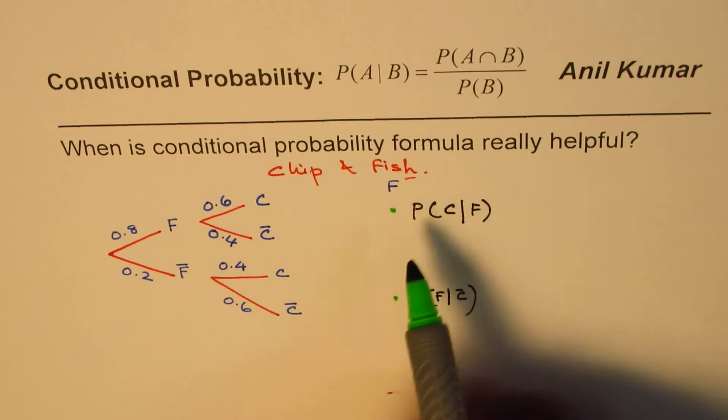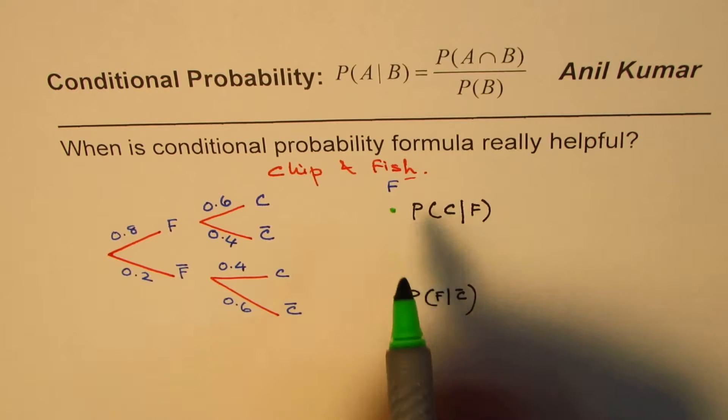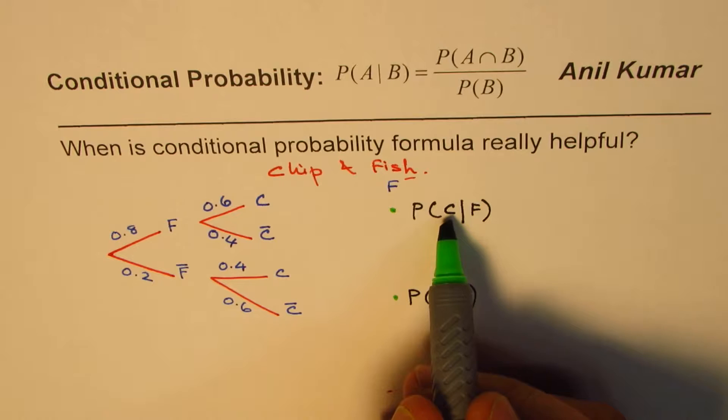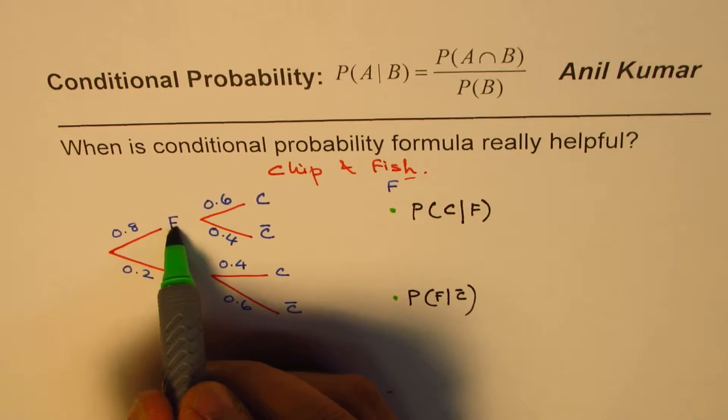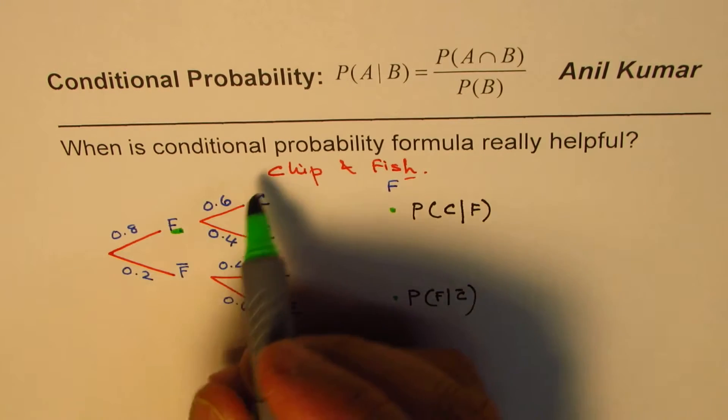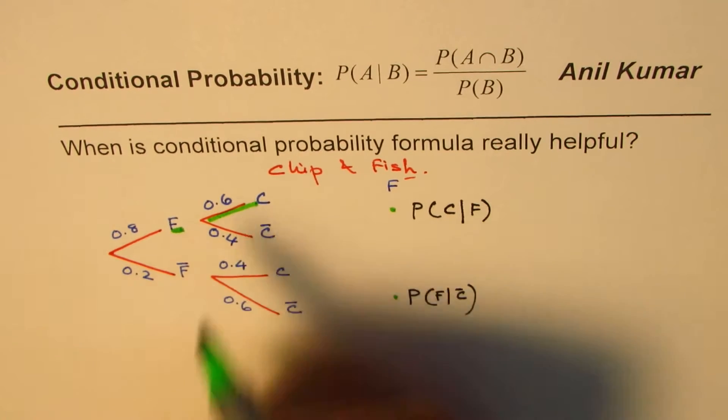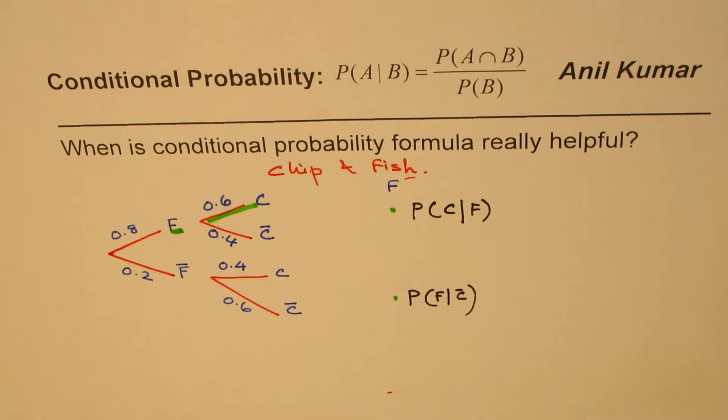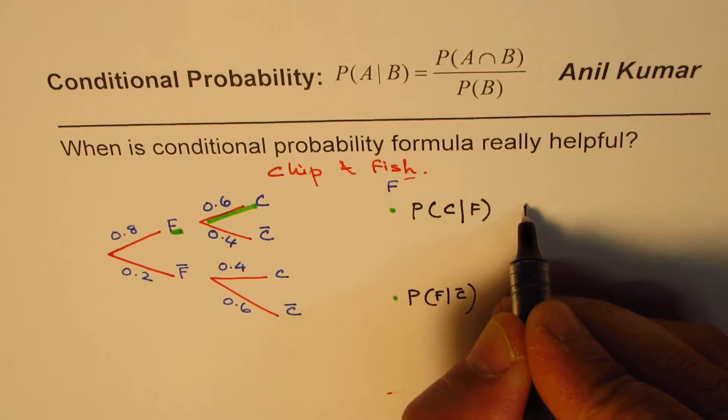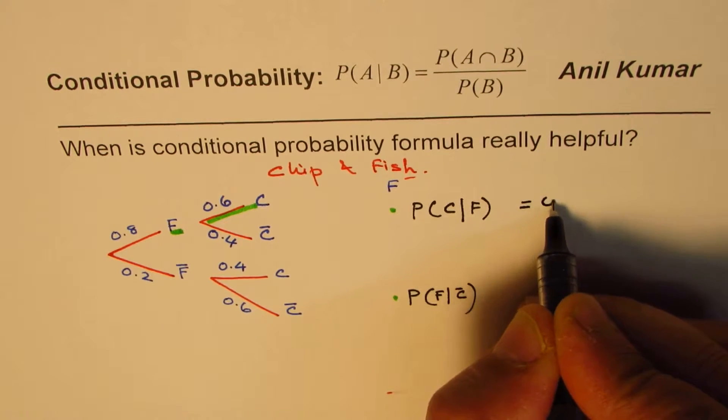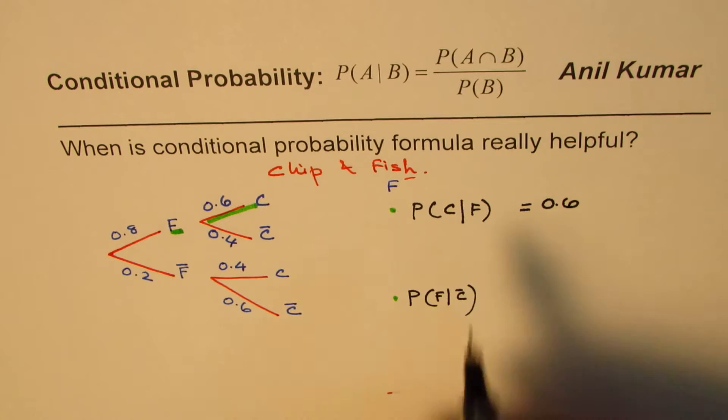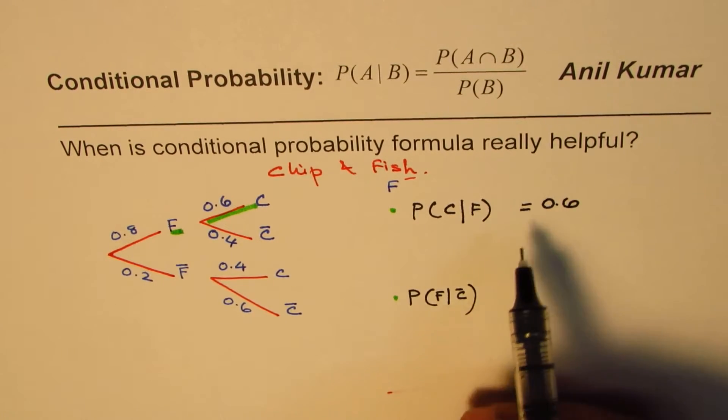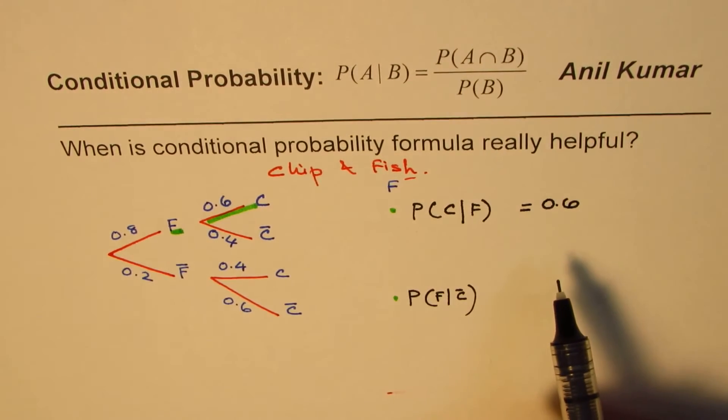Now, in the first case, what is the probability of ordering chips when we know that the fish has been ordered? So we know that fish has been ordered, and therefore, the probability for chips is very clear. It is 60%. So from the tree diagram, I could straight away write down my answer as 0.6. That's it. So as you see in this case, applying this formula is of not so much use.